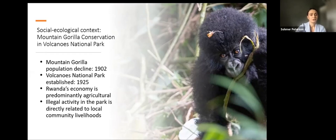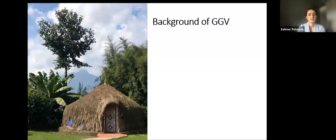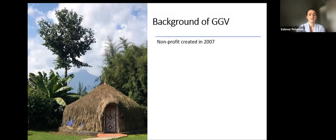With the goal of decreasing poaching inside the national park through livelihood development, in 2007 Gorilla Guardians Village was created with the idea of aiding livelihood development through conservation and tourism.